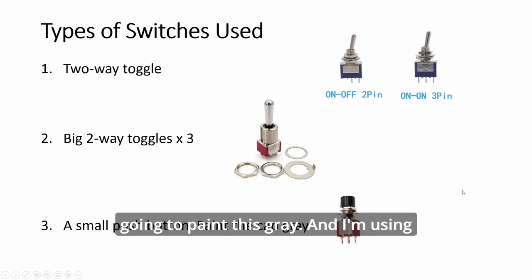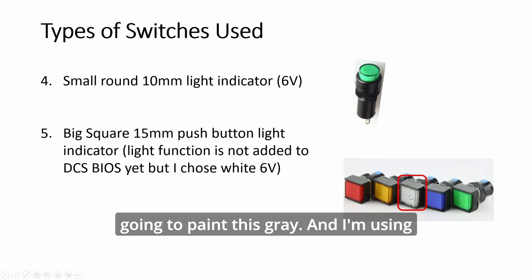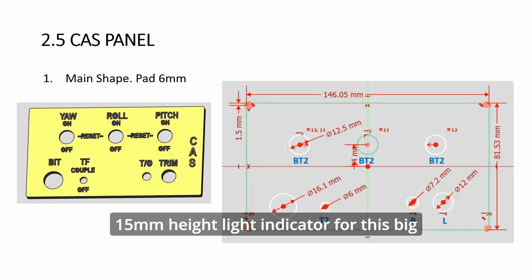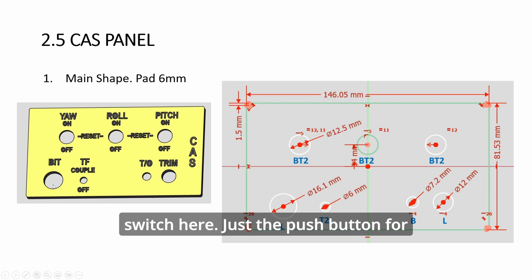I'm going to paint this gray. And I'm using 15mm white light indicator for this bit switch here. Just a push button for now. The light is not working in DCS BIOS and probably not modeled in DCS itself.